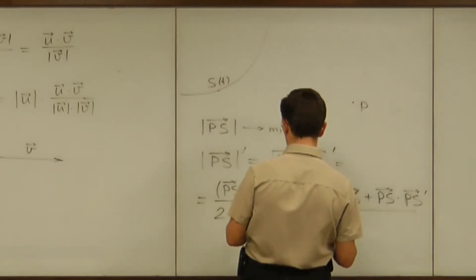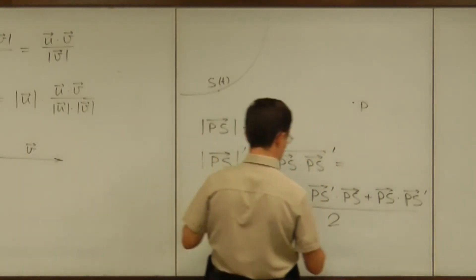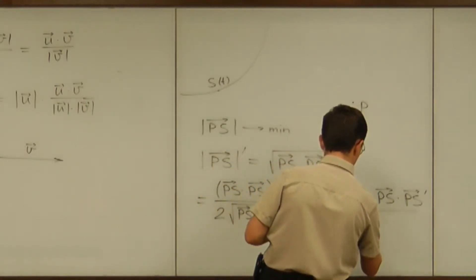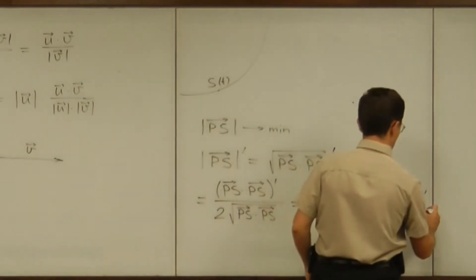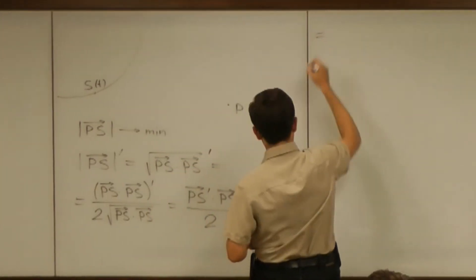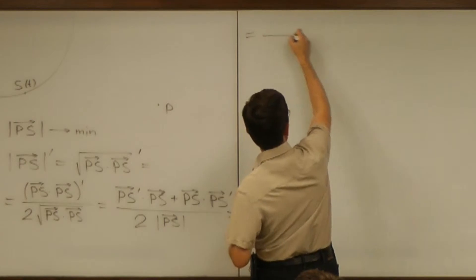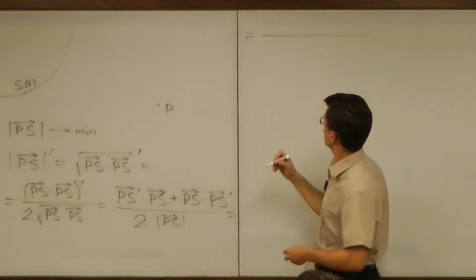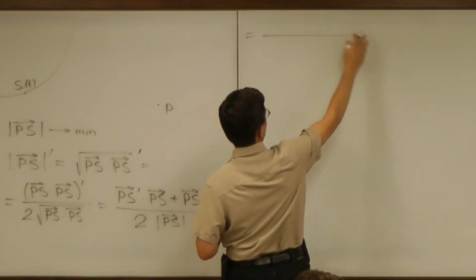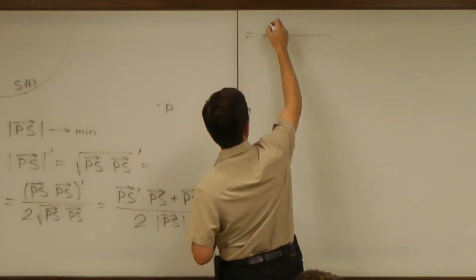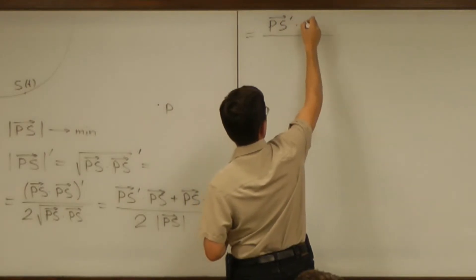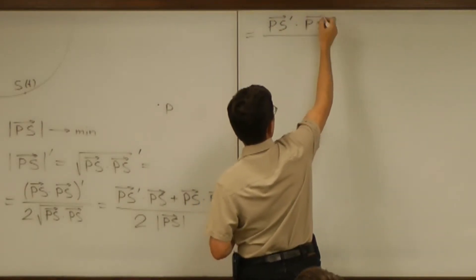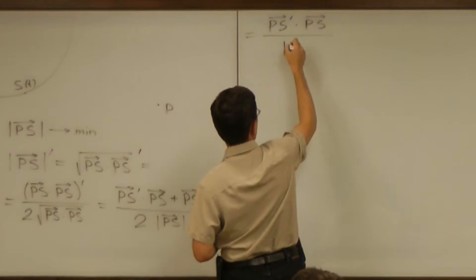Twice the square root—well, that square root is back the magnitude of PS, so let me use the shorter notation. And finally, the numerator is twice the dot product, that coefficient 2 cancels, and I'm left with PS' dot product PS divided by the magnitude of PS.